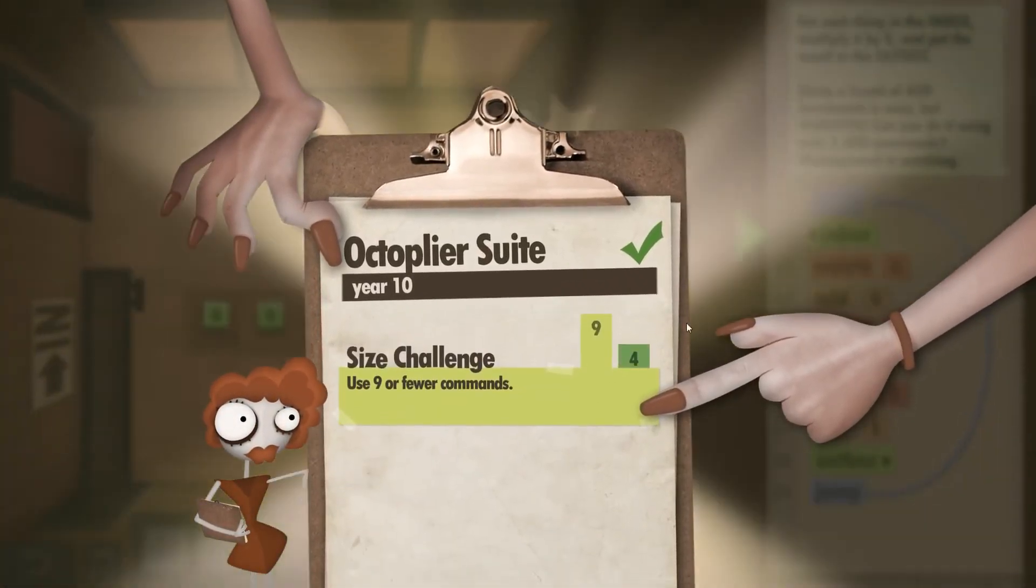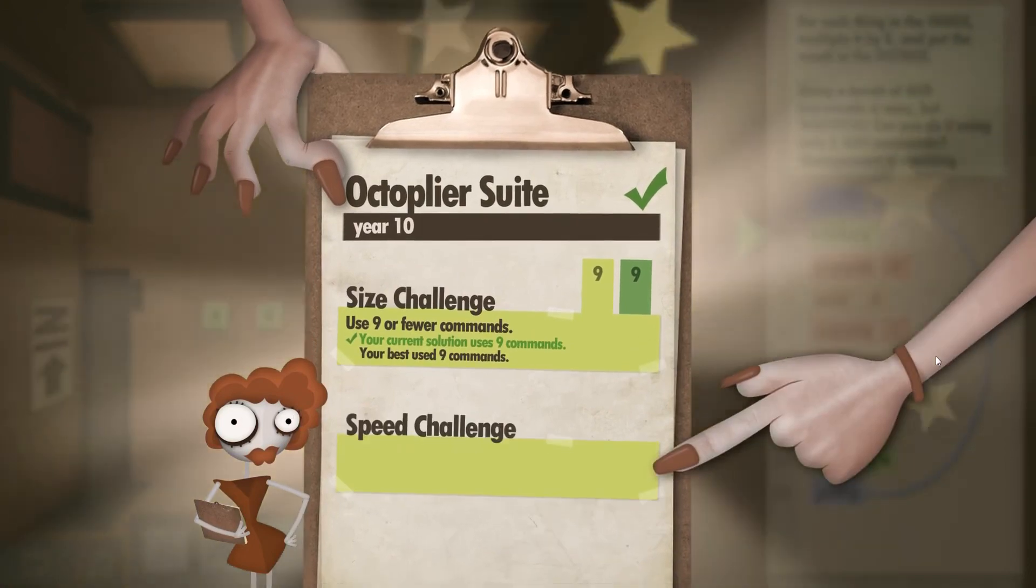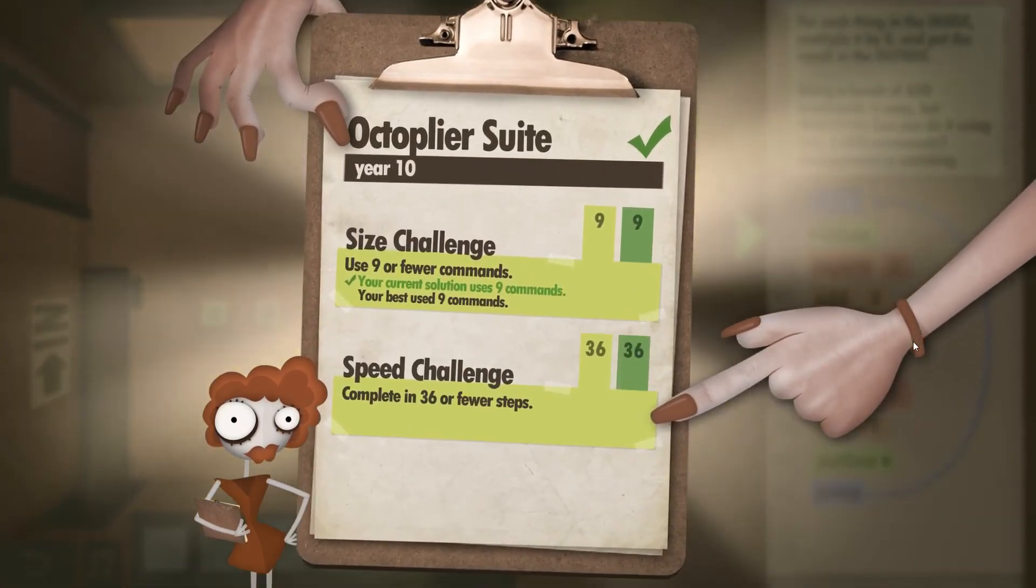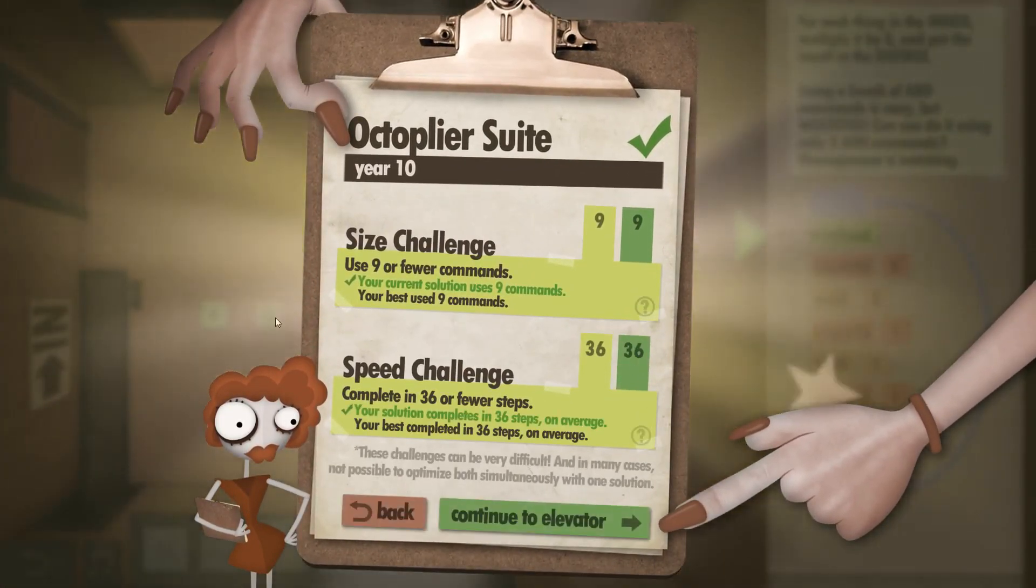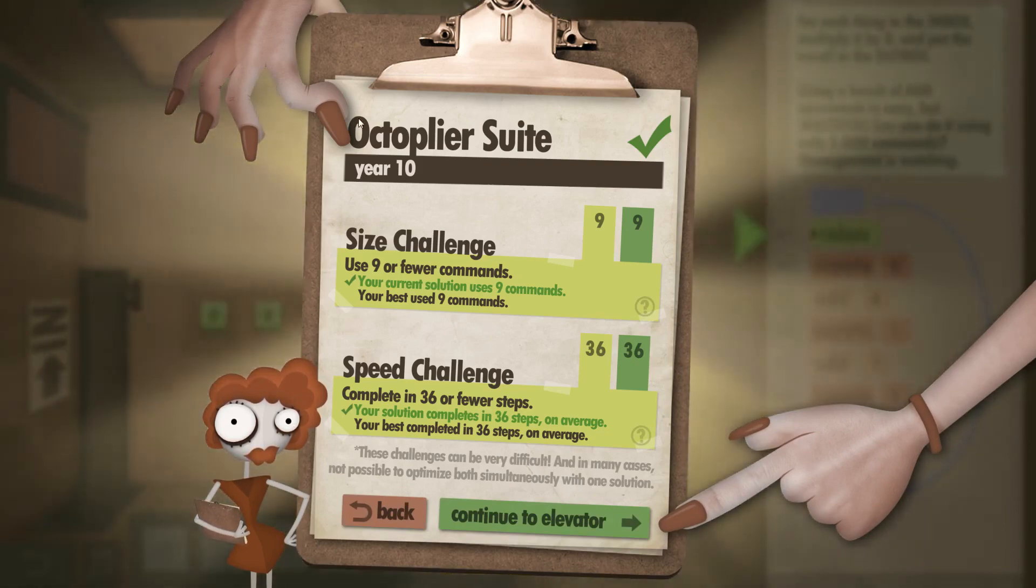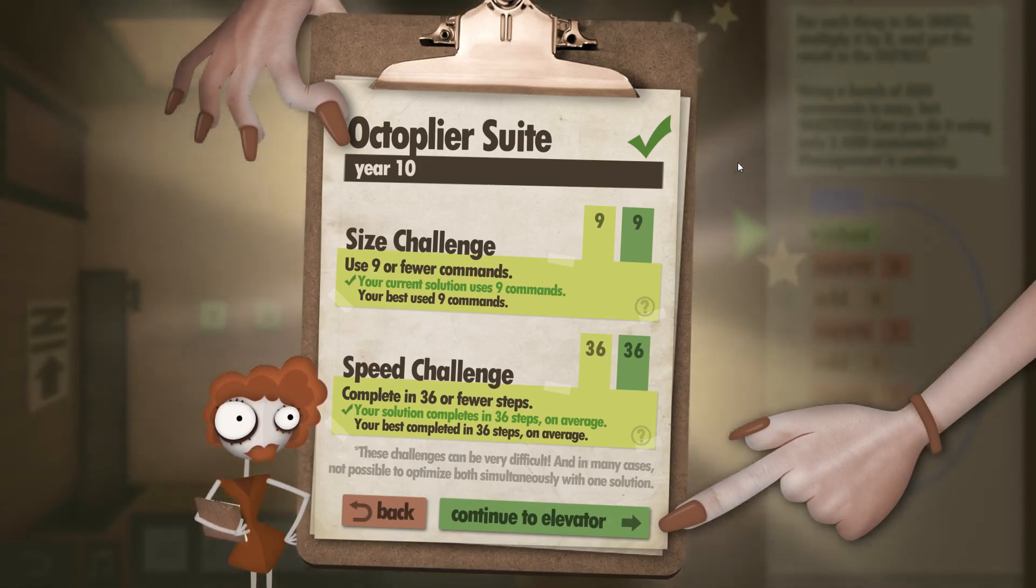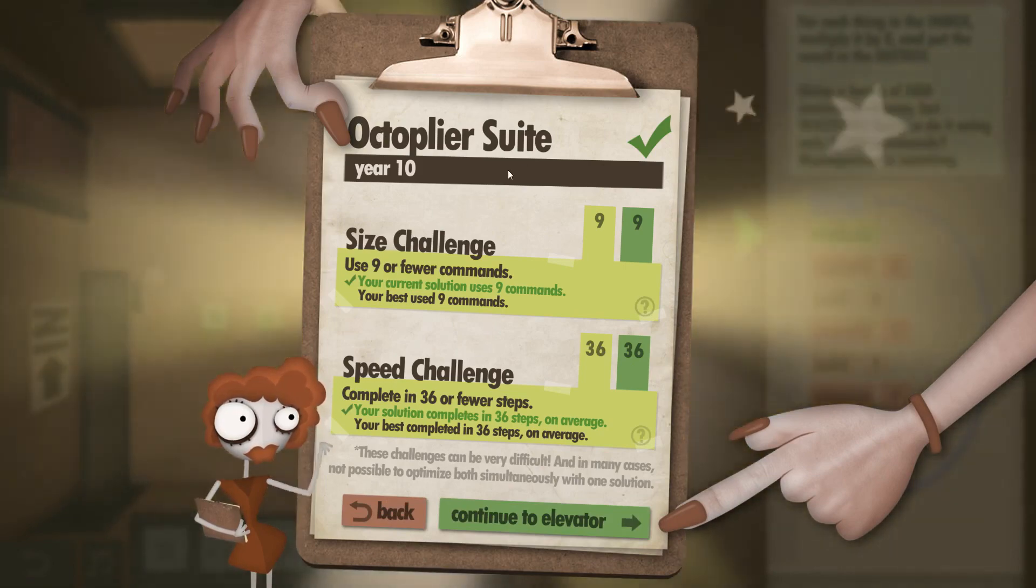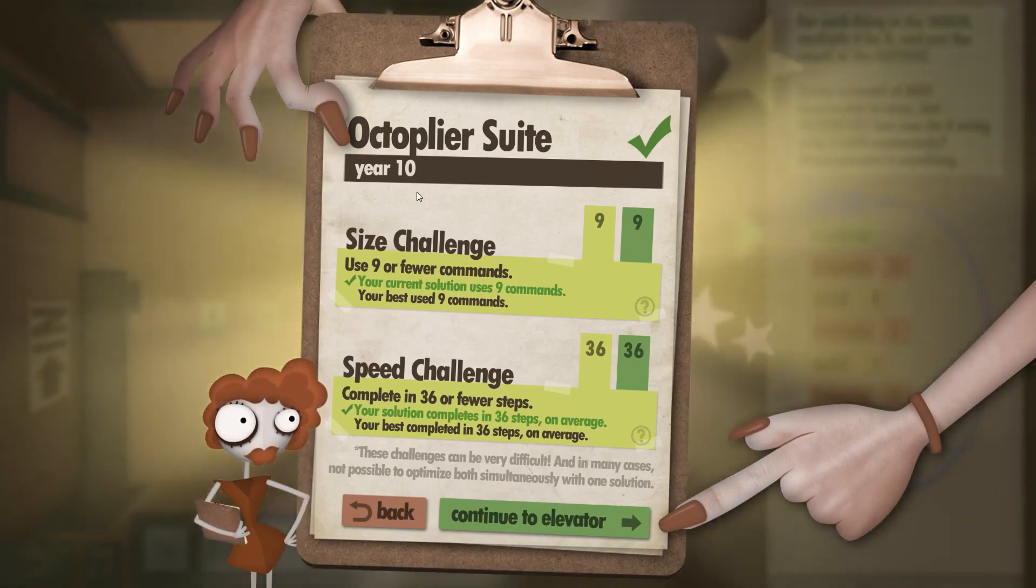Year 10. Nine of your commands, we got that. And we got exactly 36 steps, so we got the speed challenge in the same run. And that is the Octoplier Suite. Why do I keep wanting to say suit? Anyway, that's Year 10. See you next time.